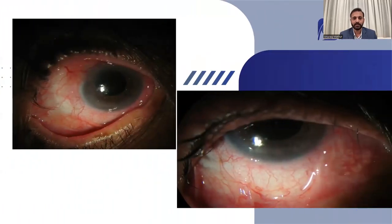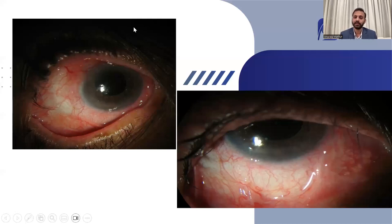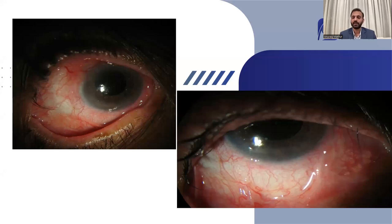On examination, we found some mucosal folds — more apparent in the lower picture. There are semilunar folds rising from the lower fornix and going towards the limbus on either side. These folds are submucosal fibrosis, which is very typical of a condition called ocular cicatricial pemphigoid.